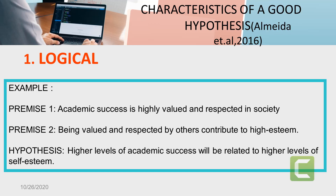Now let us proceed to the characteristics of a good hypothesis, according to Almeida et al. in 2016. A good hypothesis is usually founded on established theories or developed from the results of previous research. Specifically, a good hypothesis should have two logical conclusions of a logical argument. For example: Premise 1 — academic success is highly valued and respected in society. Premise 2 — being valued and respected by others contributes to high esteem. Conclusion or hypothesis — higher levels of academic success will be related to higher levels of self-esteem.